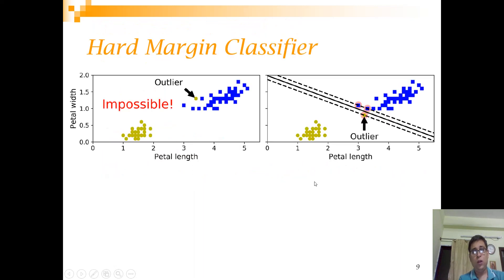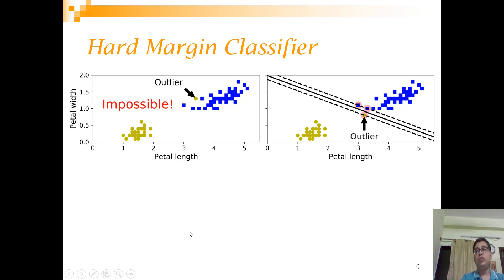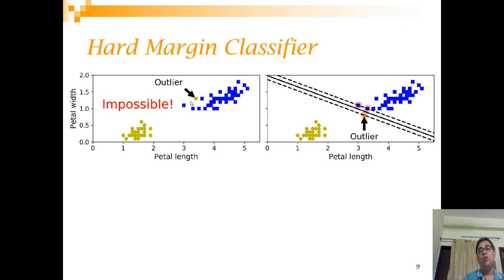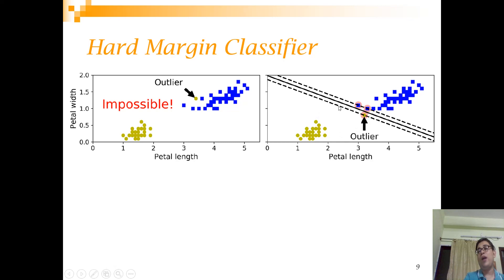A problem with this classifier is that it is too strict. If there are outliers — for example, one data point from a class that has somehow ended up on the wrong side — no linear decision boundary supported by the supporting lines can be fitted. Similarly, here there is an outlier and while you can fit a line, the majority of one class ends up very close to the margin while the other class is far from the decision boundary.